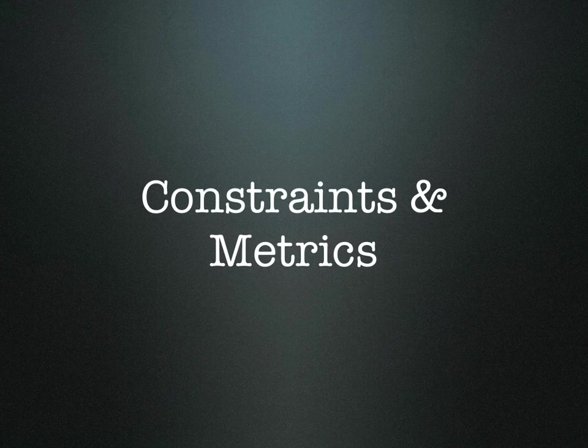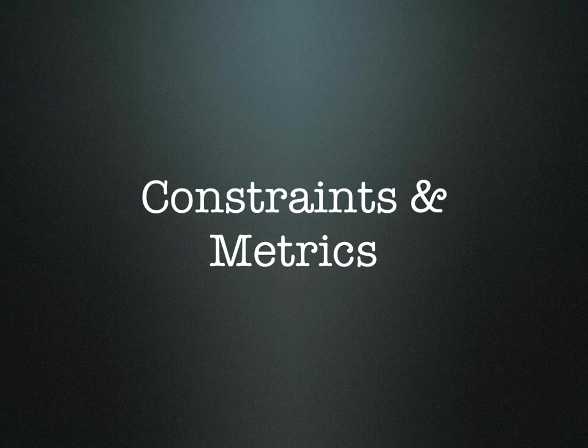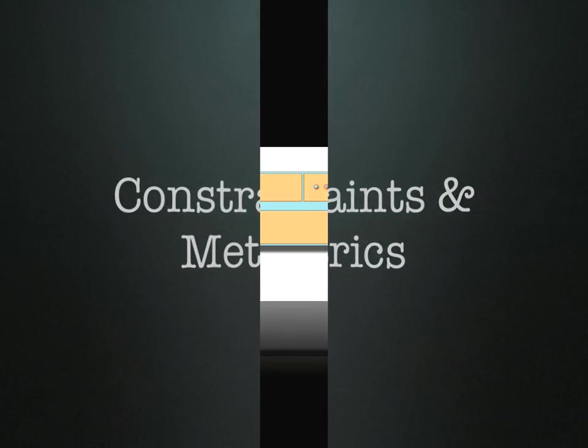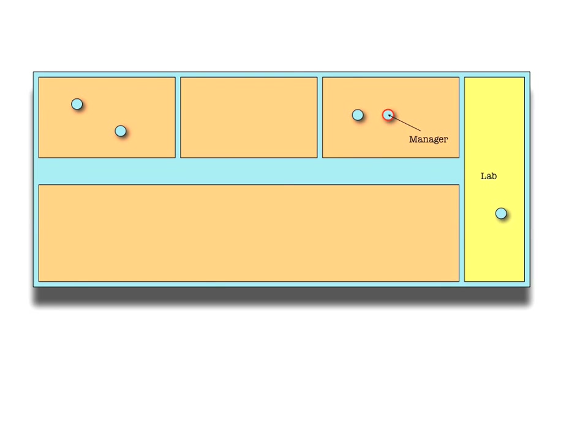Once we have our basic components, we need to be able to evaluate and compare particular allocation plans. We need to be able to ask, does this allocation meet our rules, and in comparing two valid allocations, which one is objectively better? For the purpose of this discussion, a very simple example will be used. Here we have a single building with four office areas in orange and a small lab in yellow. There are four employees and one manager, all assumed to be in the same organization.